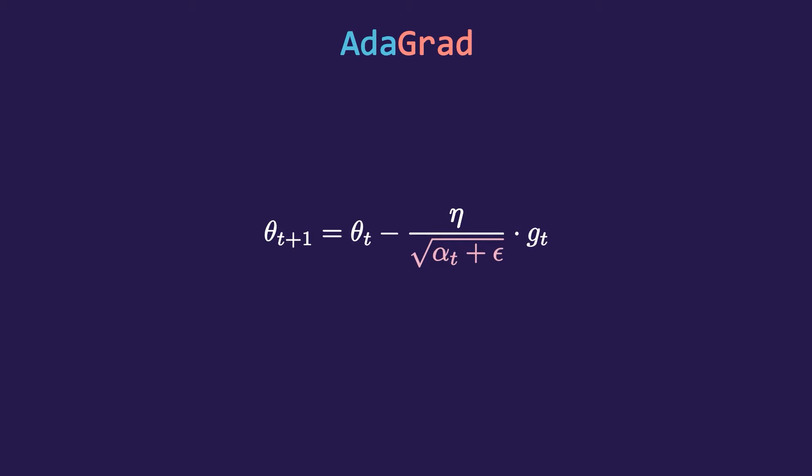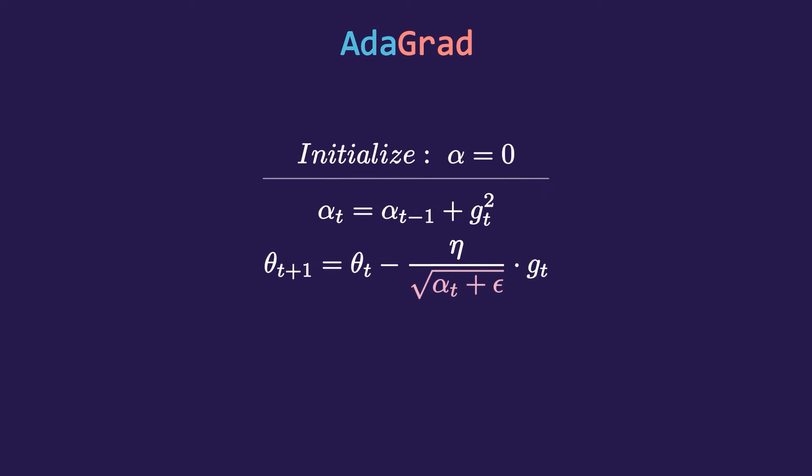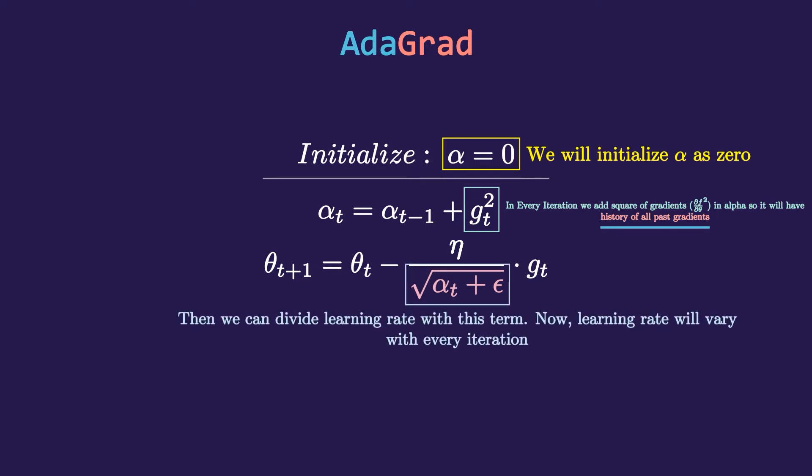In AdaGrad, we divide the learning rate with the square root of the past gradients. We can calculate past gradients as follows: first we will initialize a value alpha as zero, and in every iteration we will keep adding the square of gradient in this alpha. So the alpha will contain all the history of past gradients.